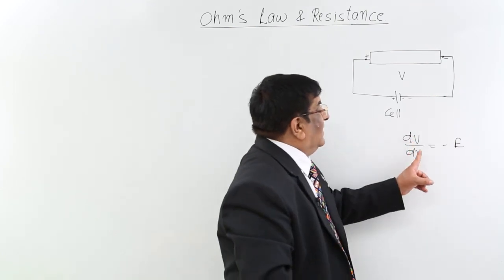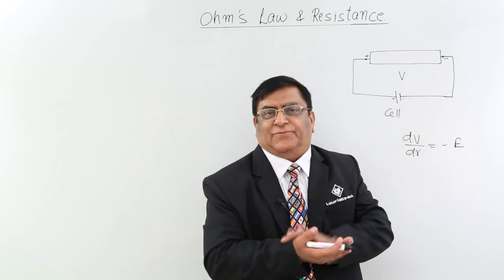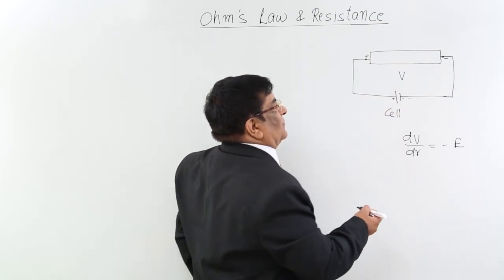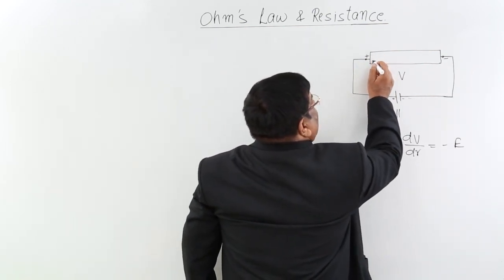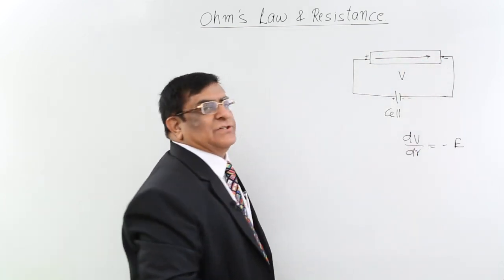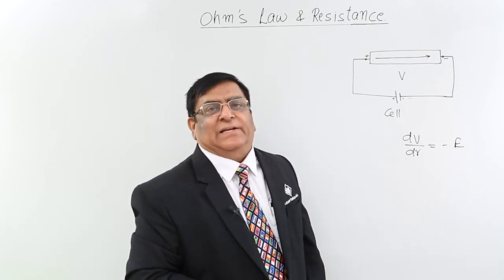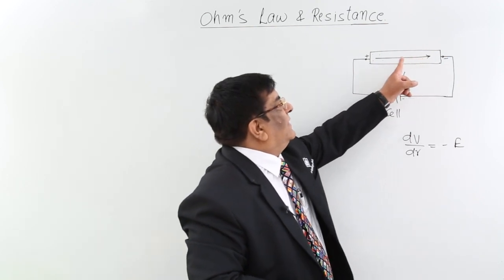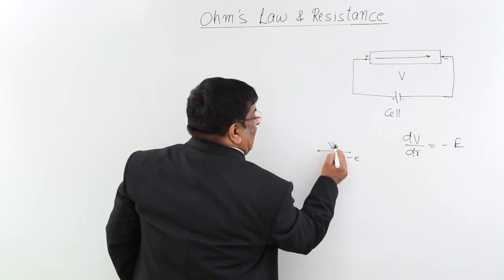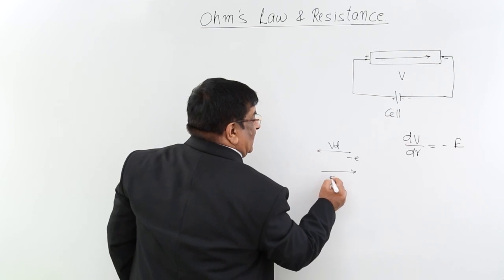So potential difference always creates an electric field, or in the electric field the two points have a potential difference — it is both ways connected. This creates potential difference V and the charges keep on moving. When they move, what is the direction of electric current? We have learnt in the previous class that if electrons are moving in this direction, then the opposite direction is taken as the direction of electric current.